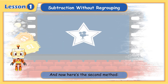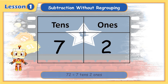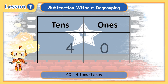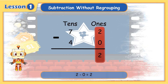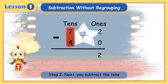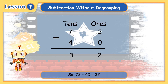Here's the second method. 72 equals 7 tens, 2 ones. 40 equals 4 tens, 0 ones. Step 1: subtract the ones. 2 minus 0 equals 2. Step 2: subtract the tens. 7 minus 4 equals 3. So, 72 minus 40 equals 32.